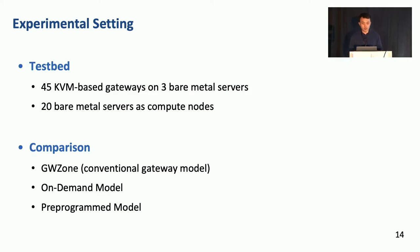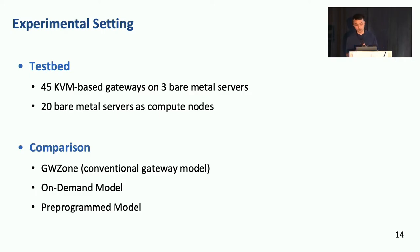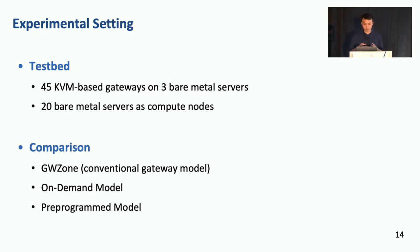Now let's move to our evaluation. On our testbed, we deploy 45 KVM-based gateways on three bare metal servers, and use 20 other bare metal servers as compute nodes to run VM instances and virtual switches. All servers are connected by a top-of-rack switch. We compare Zeta with three typical frameworks: the gateway model (referred to as GWZone), the on-demand model, and the pre-programmed model.